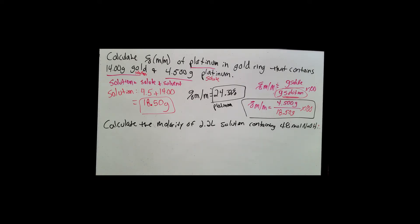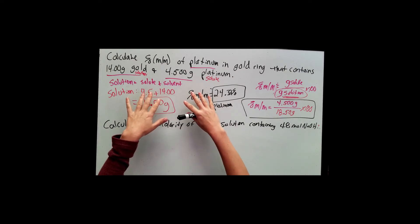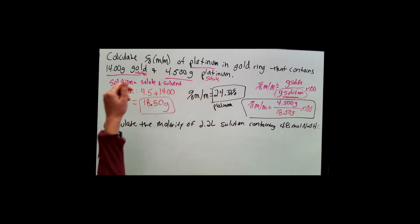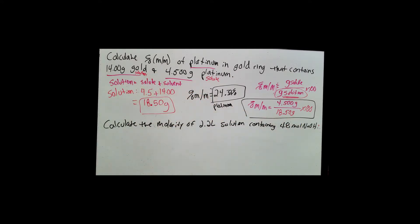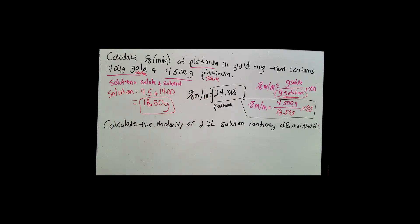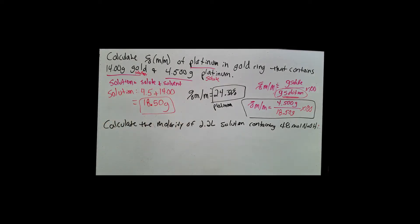Depending upon what materials you have, a different concentration calculation might apply. In this case it would be hard to do mass-volume percent because gold and platinum are both solids at room temperature, so trying to get the volume of gold or platinum would make things more difficult.